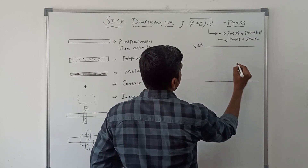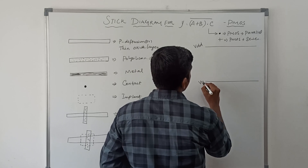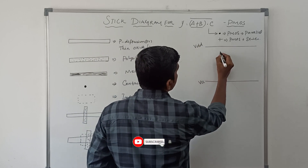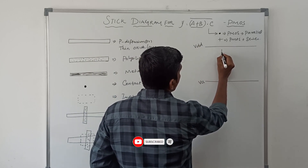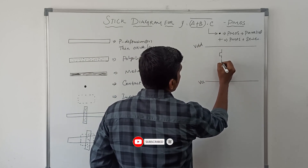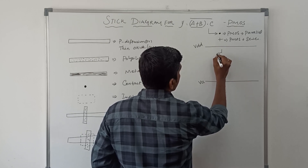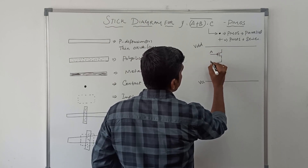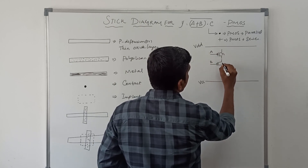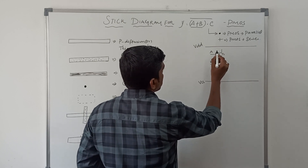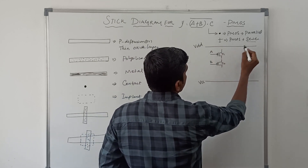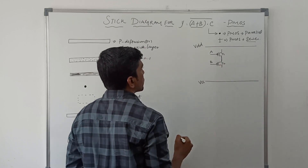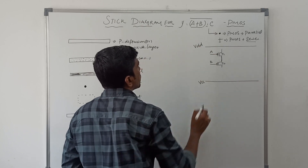This line is VDD and this line is called VSS. In this boolean expression there are two variables, and each variable consists of one transistor. This transistor input is A, this transistor input is B, and the transistors are named T1 and T2. The plus operator means these PMOS transistors T1 and T2 are connected in series.